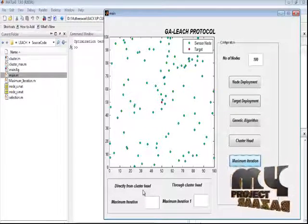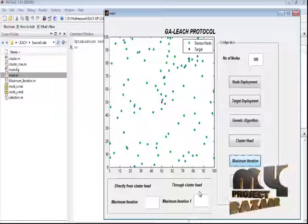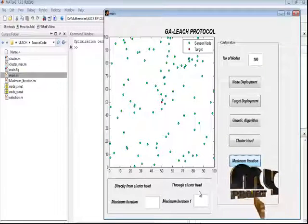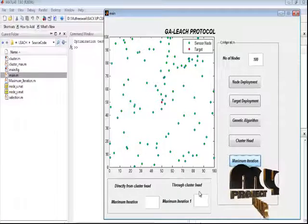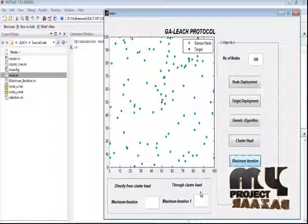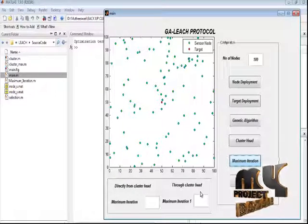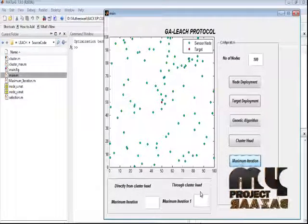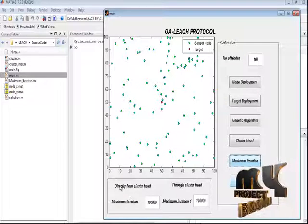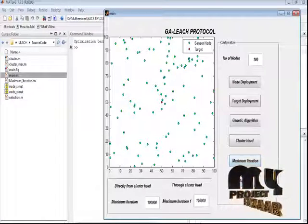Here maximum iteration will be calculated for cluster heads. For transferring the data directly to the base station, the cluster head transfers the data to the base station through various numbers of cluster heads. This process will be executed among all iterations. This will take some time for executing. Here we obtain the maximum iteration for directly from the cluster head and through the cluster head. By pressing the analysis button, we get the energy level graph.